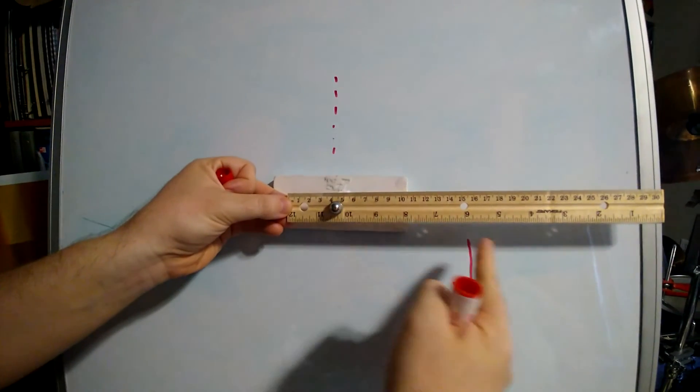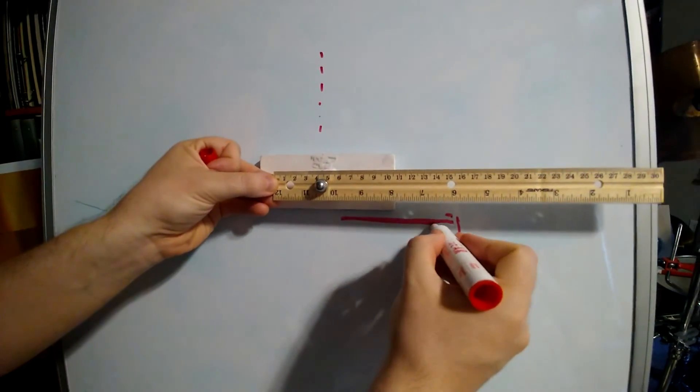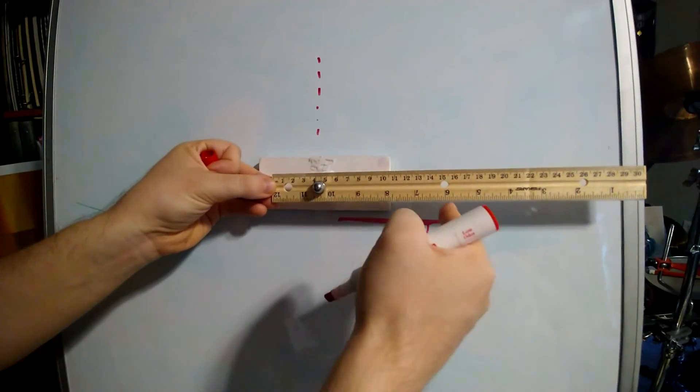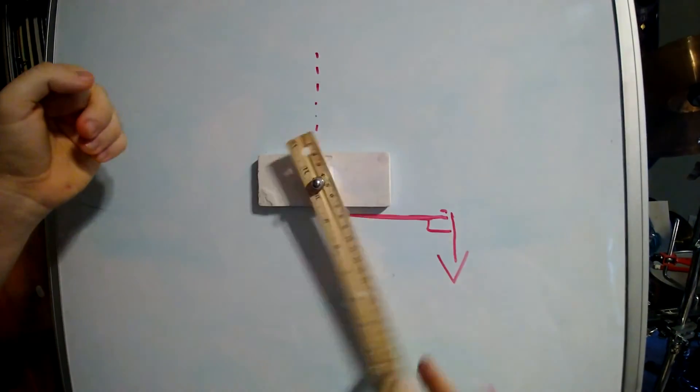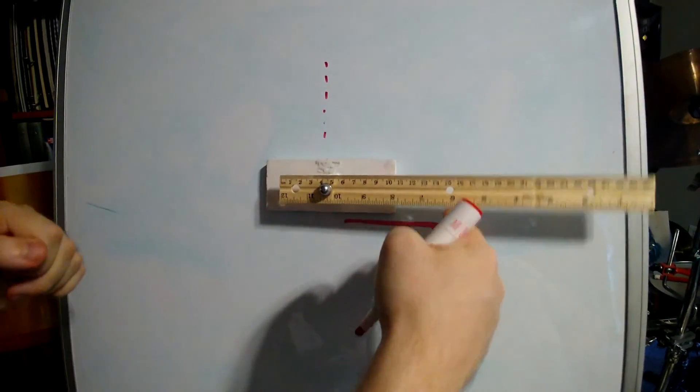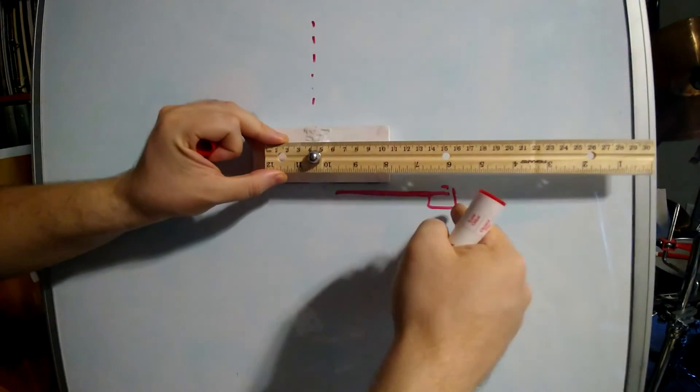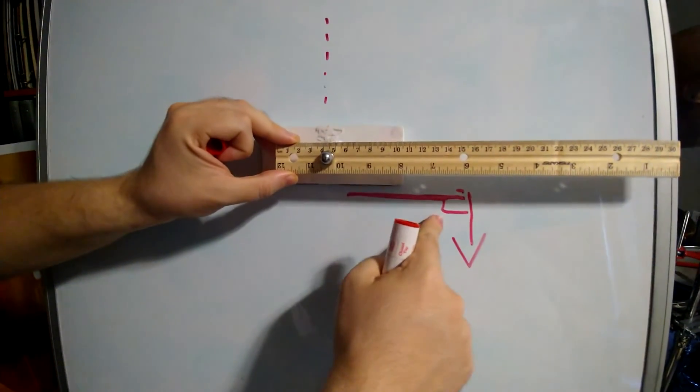But now there is torque. Because there is a radius and there is a 90 degrees. So now we have torque. Let's see what happens if I let it go. You see? There is an unbalanced torque that produces the rod to move. Force is at a distance and it is perpendicular. So now we have a torque.